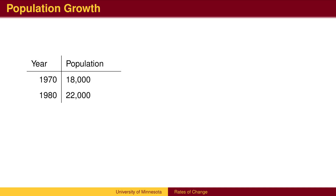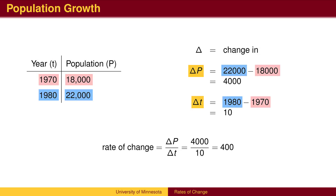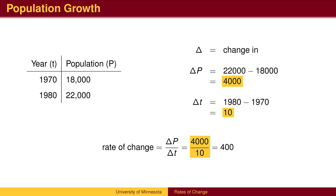We calculate the rate of growth of the population by calculating the change in population and the change in time. The Greek letter delta is used to represent the change in a quantity. We typically use variables to represent the quantities we are interested in measuring. In this case, we will use P for population and T for time measured in years. We calculate the change in each variable by subtracting the initial value from the final value, then divide the two changes to get the rate of change.